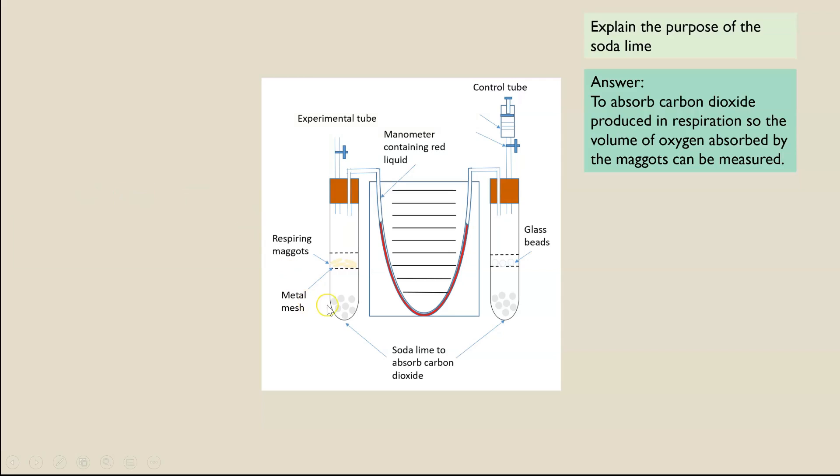The purpose of the soda lime is to absorb the carbon dioxide produced, and that's because the volume of oxygen that will be absorbed by the maggots will be equal to the volume of carbon dioxide produced in respiration. So if that carbon dioxide was not absorbed, the volume would always remain constant, the pressure would remain constant, and that liquid would not move. And therefore we'd have no way to measure the rate. So it absorbs the carbon dioxide so we are able to actually measure the volume of oxygen absorbed by the maggots, and we use the volume of oxygen absorbed to represent the rate of respiration.